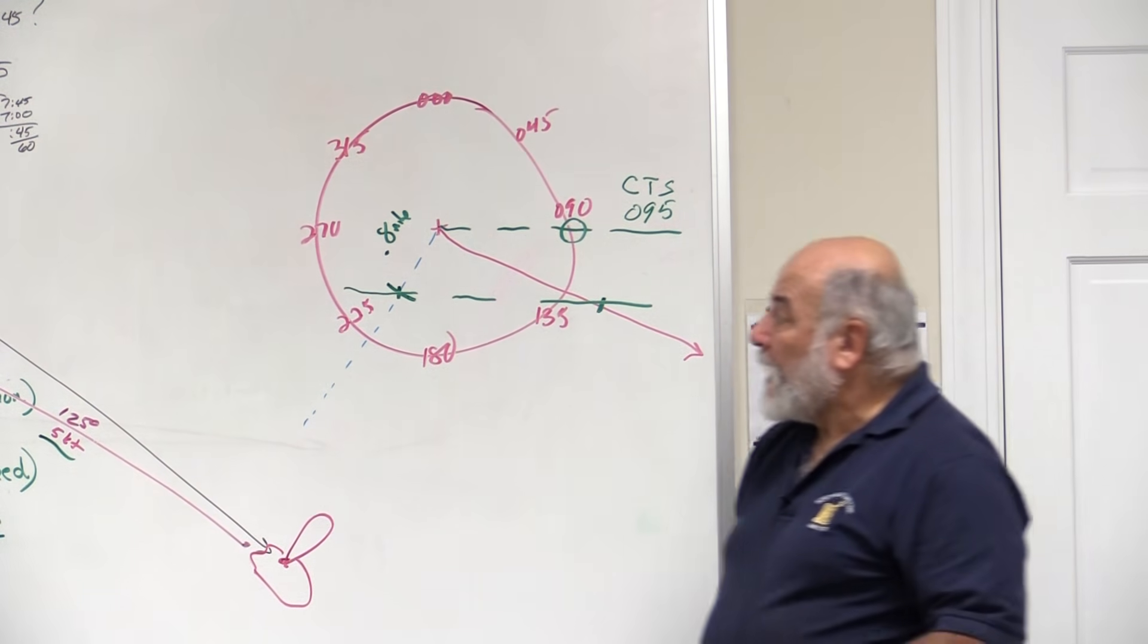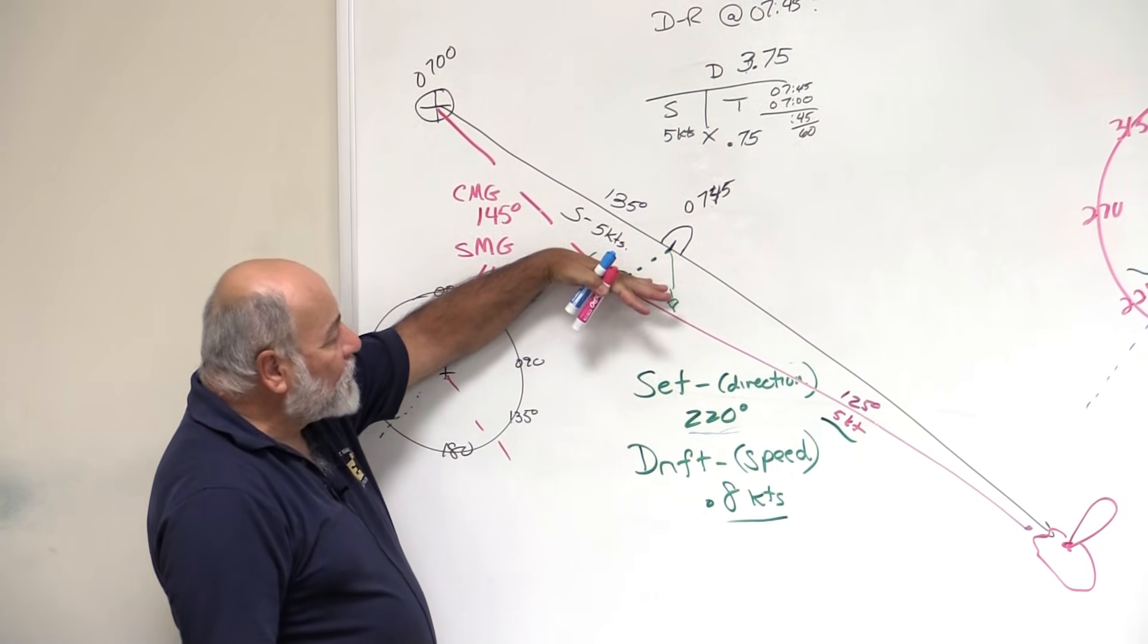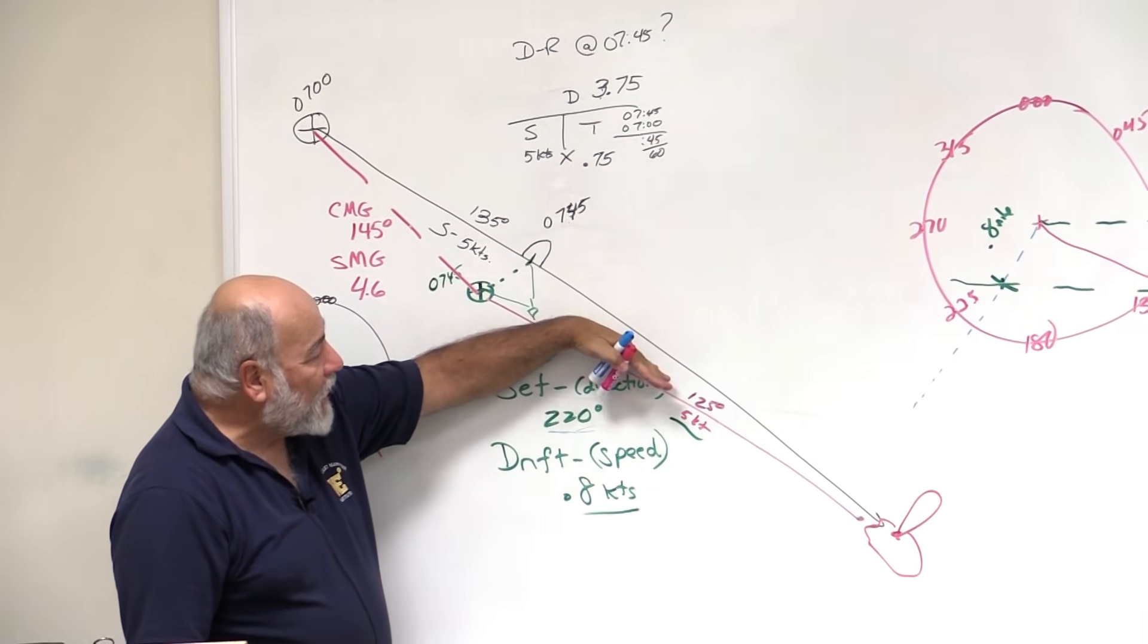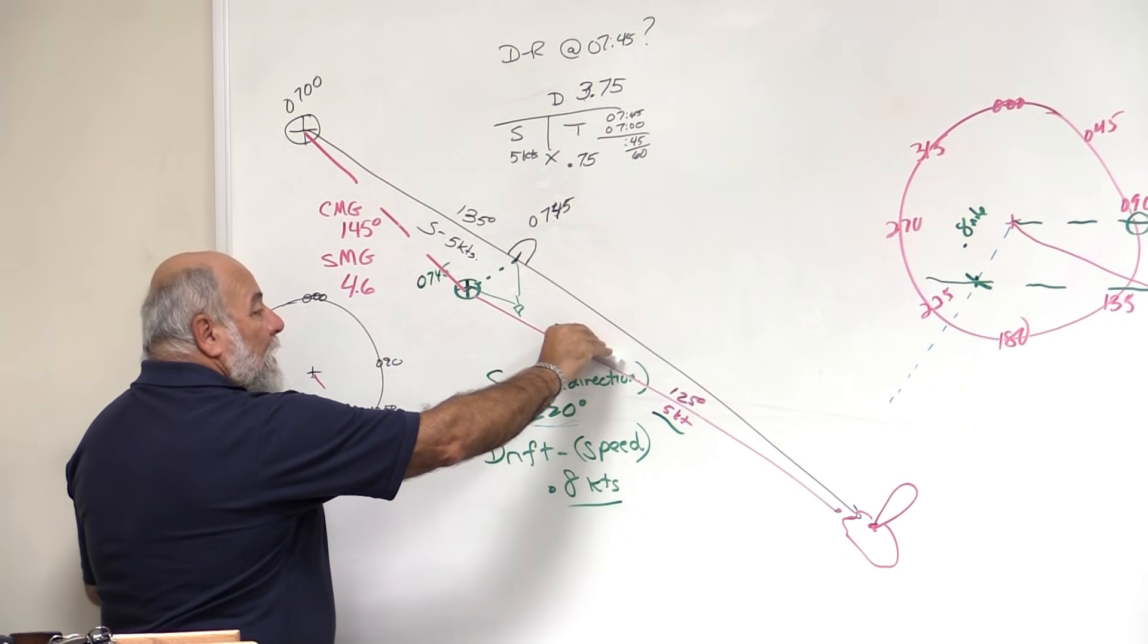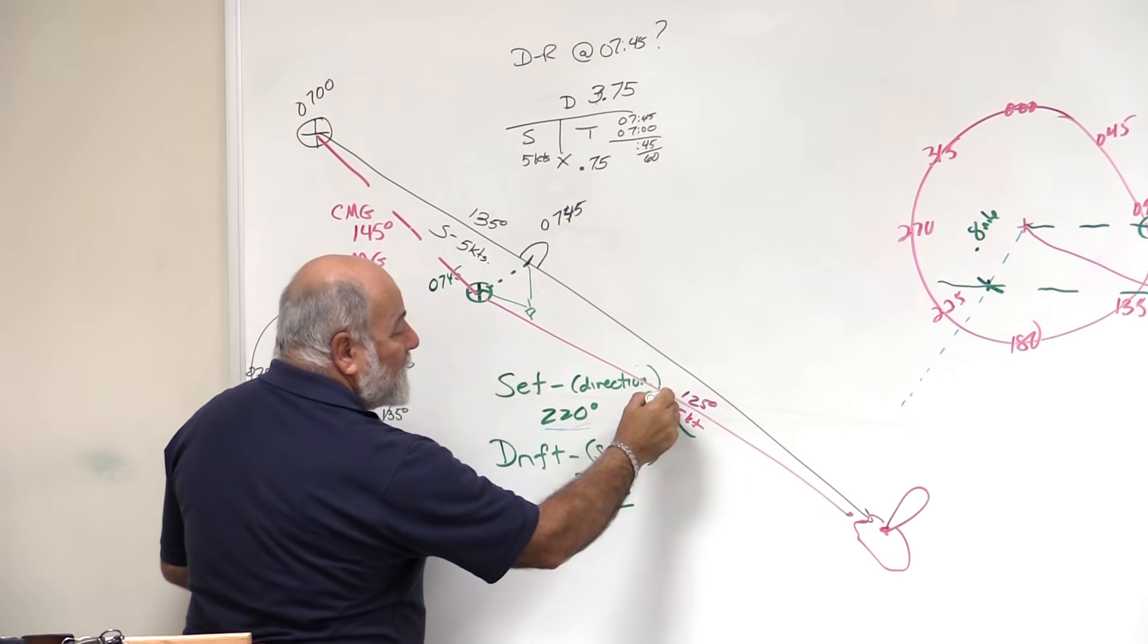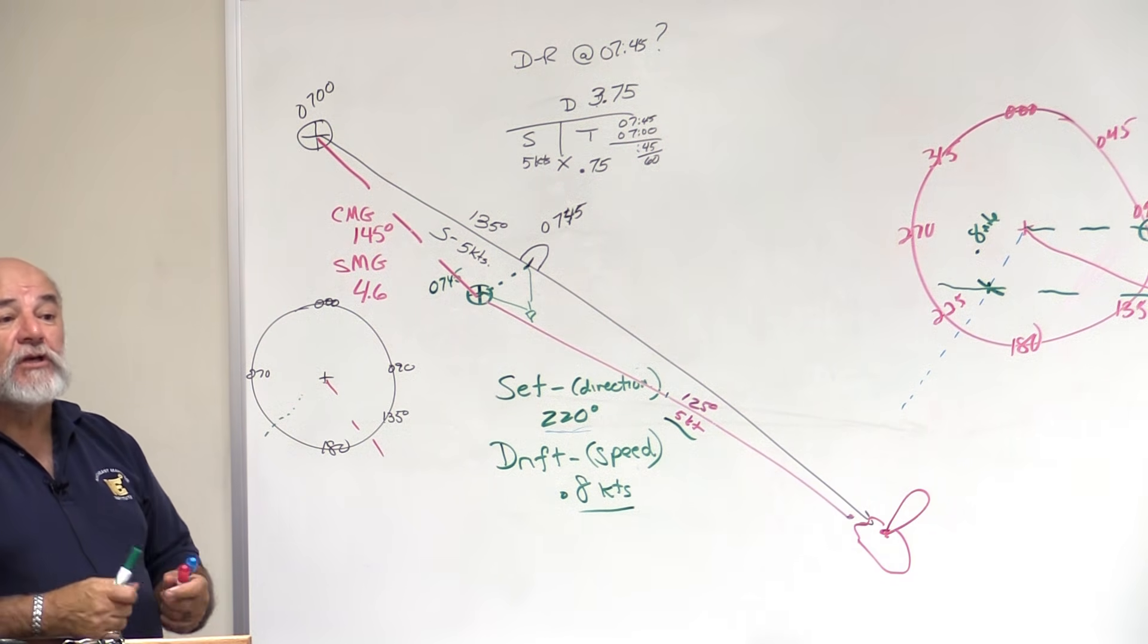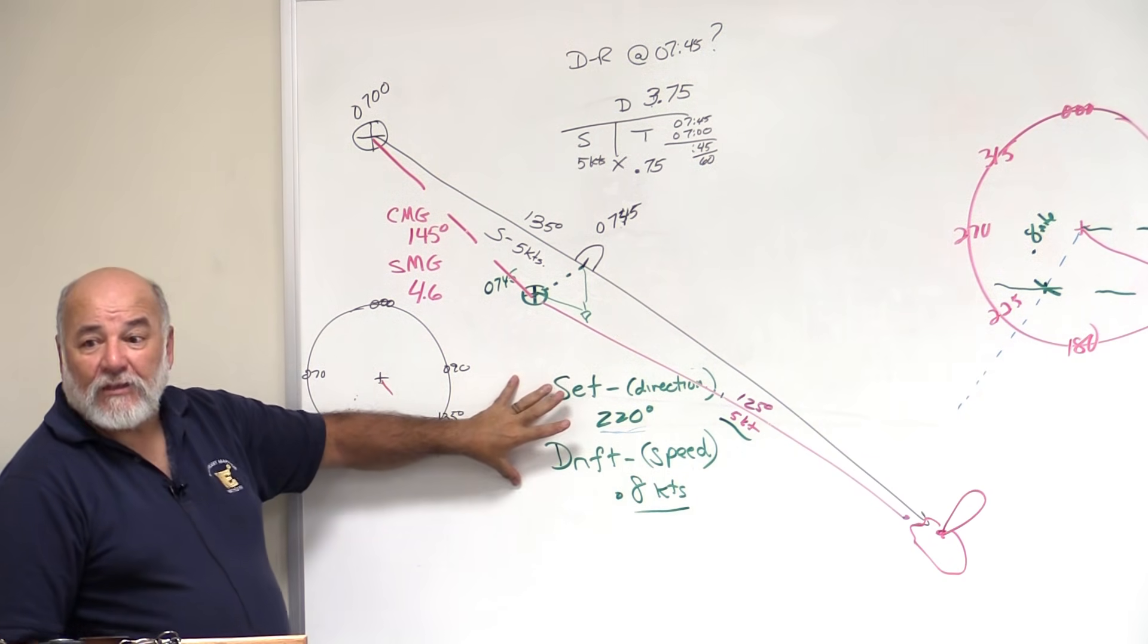So now, I come over here on my boat, and I steer 095, and I steer that for an hour, and over that hour at .8 knots, what's the current doing? It's pushing me back on course, and in an hour I should be somewhere on that line, or pretty darn close to it. So I've used the current, I've used what I learned, I used my set and drift to my advantage.